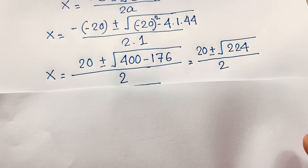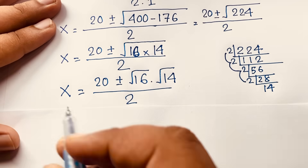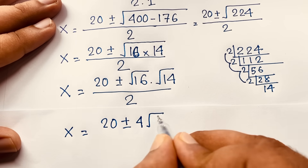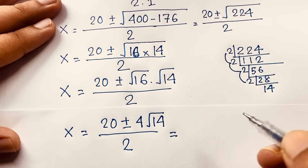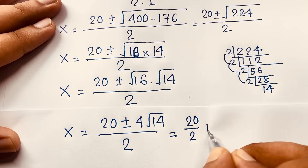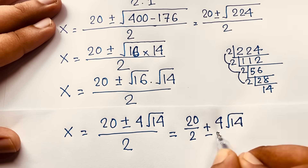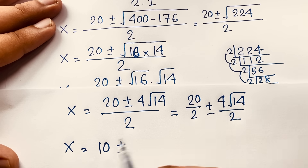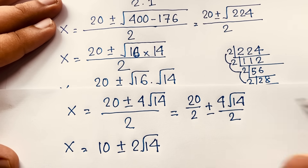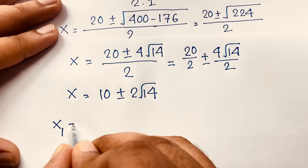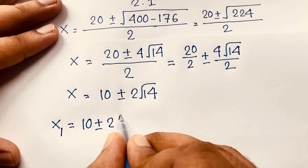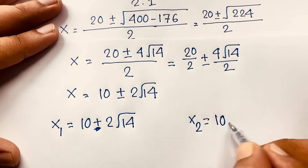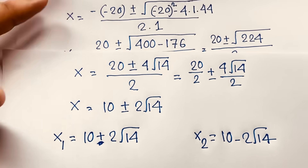Solving step by step: dividing through by 2 gives x equals 10 plus or minus 2 square root 14. So our two solutions are: x₁ equals 10 plus 2 square root 14, and x₂ equals 10 minus 2 square root 14.